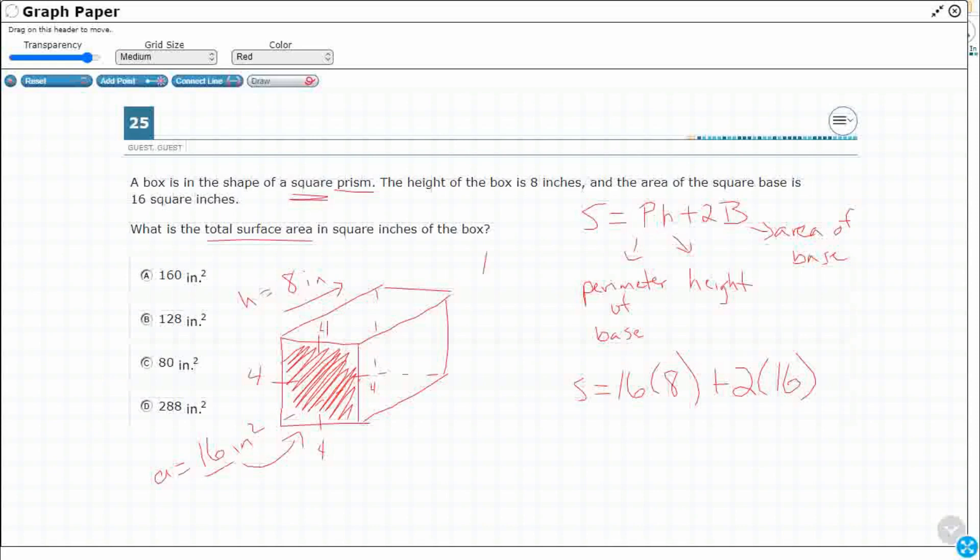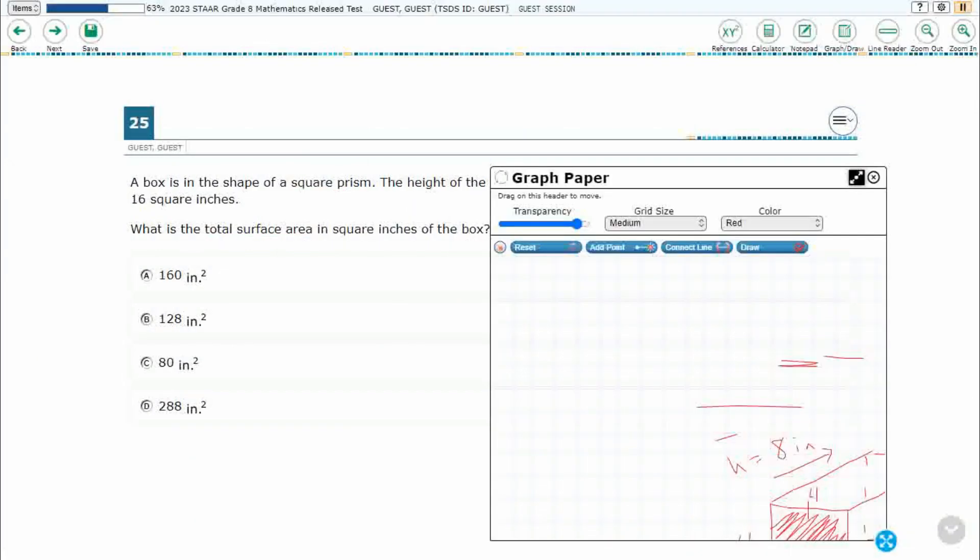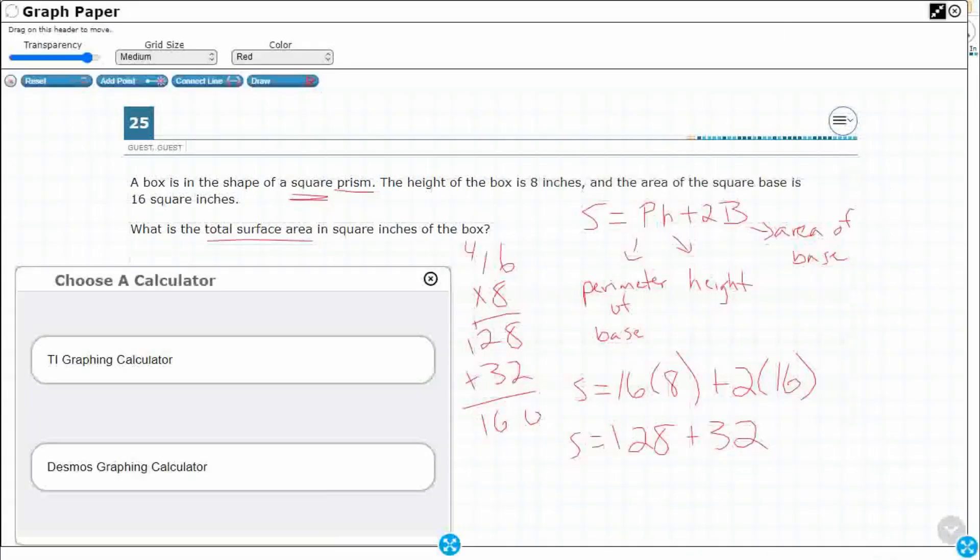So my 16 times 8, that's going to be 128. So S equals 128 plus 2 times 16. That's going to be 32. So let's add 32 to this. It looks like I'm going to get 160, which I do see is A, but I did some hand calculations there. Wouldn't hurt to go and bring out the calculator just to make sure.